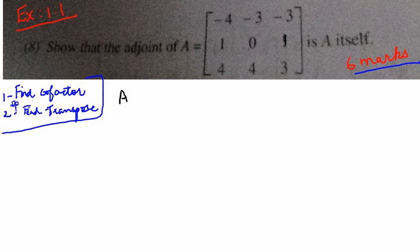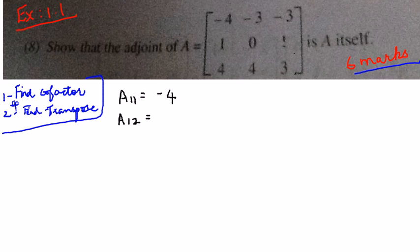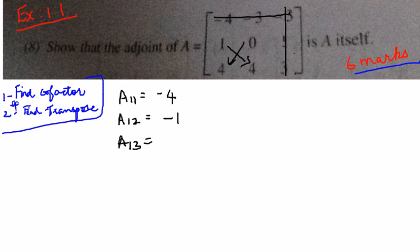For A₁₁, the first row and first column element: hide the corresponding row and column and the remaining 2×2 matrix gives 0×3 minus 1×4, so 0 minus 4 equals minus 4. For A₁₂, first row second column, the remaining matrix gives 1×3 minus 1×4, so 3 minus 4 equals minus 1. For A₁₃, first row third column, the remaining matrix gives 1×4 minus 0×4, so 4 minus 0 equals 4.